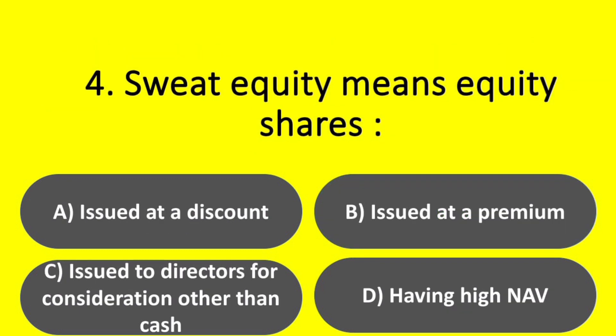Question. Sweat equity means equity shares: Option A – Issued at a discount. Option B – Issued at a premium. Option C – Issued to directors for consideration other than cash. Option D – Having high NAV. Answer: Option C – Issued to directors for consideration other than cash.